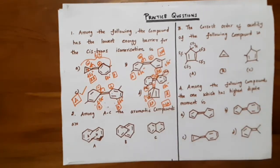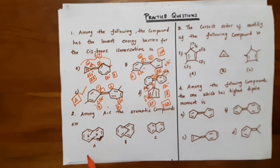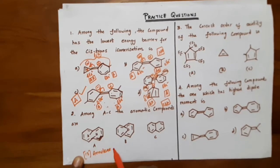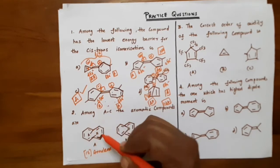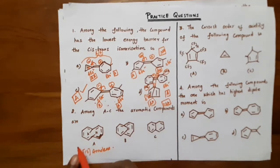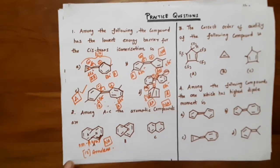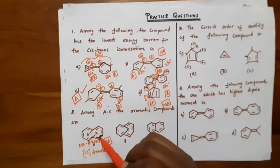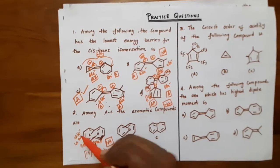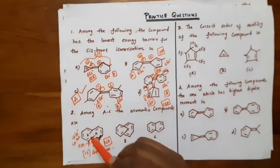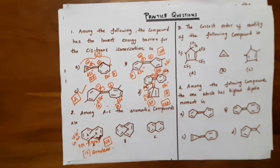The second question: among A to C, which are the aromatic compounds? The first option is 10-annulene. We know that 10-annulene has 2 inner hydrogens which experience Van der Waals repulsion, making it a non-planar molecule. Hence, even though it has 10 pi electrons obeying 4n+2 rule, the 10-annulene is non-planar and therefore non-aromatic.